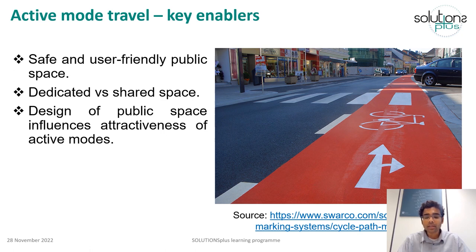Shared space between active modes and motorized vehicles can reduce safety. However, if there is not enough space for dedicated lanes, it is important to ensure that enough crosswalks are provided and lower speed limits are applied in such areas for motorized traffic, so that they are less dangerous to cyclists and pedestrians.